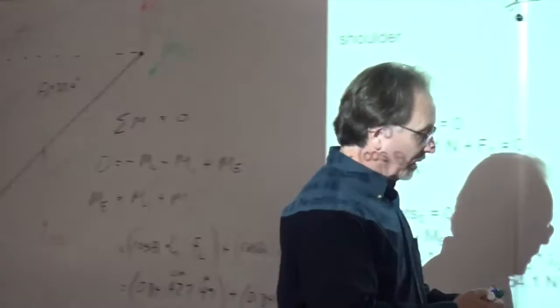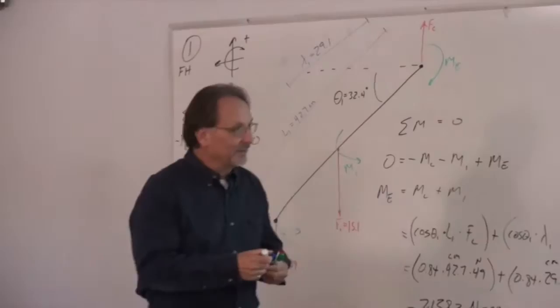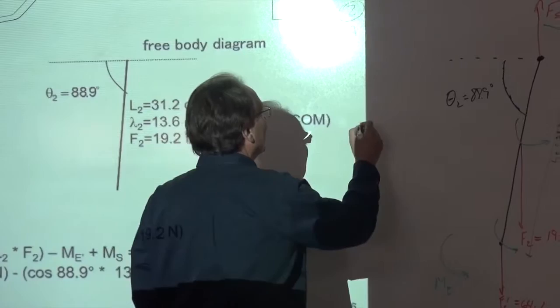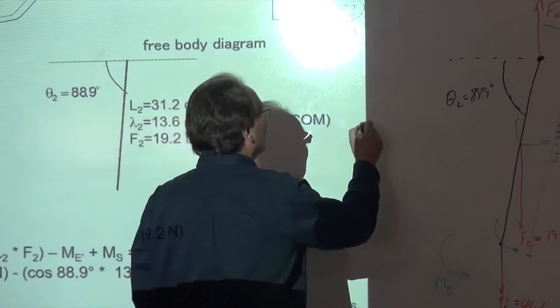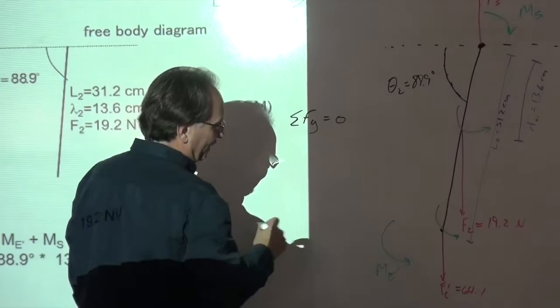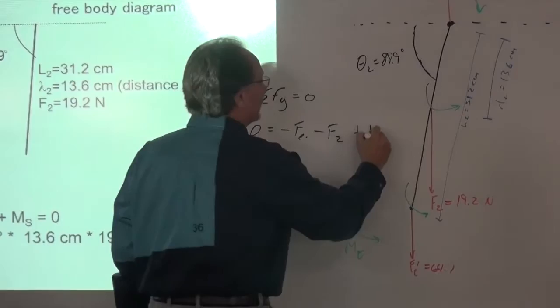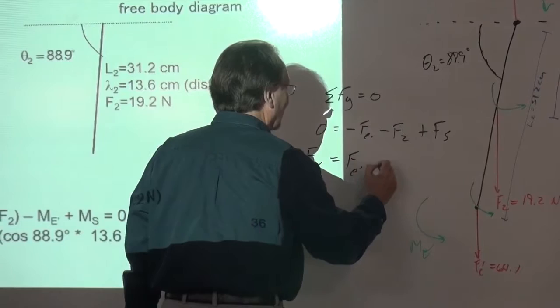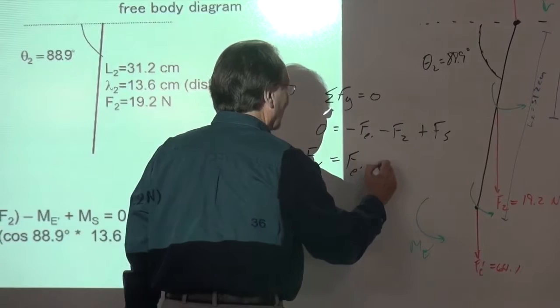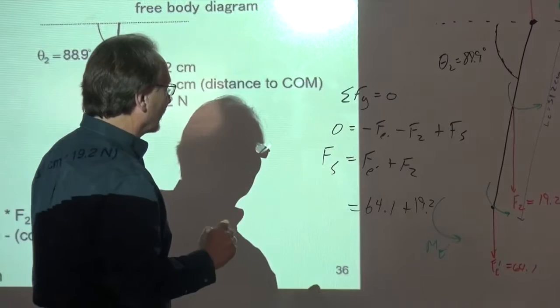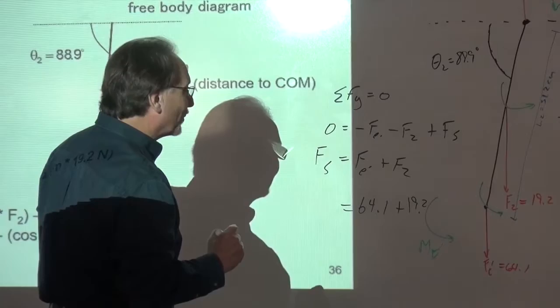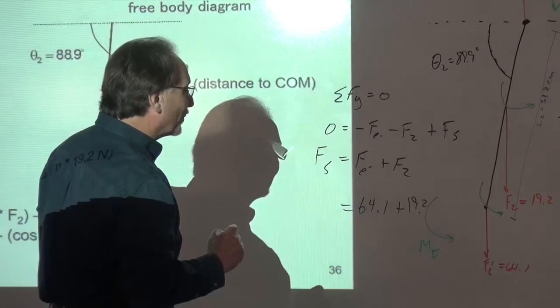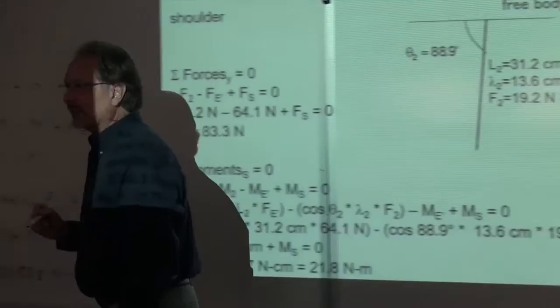Now let's write our equations of static equilibrium. Summation of forces in the Y direction equals zero: F sub X equals F sub E prime plus F2, which is 64.1 plus 19.2 equals 83.3 newtons. That's the reactive force at the shoulder.